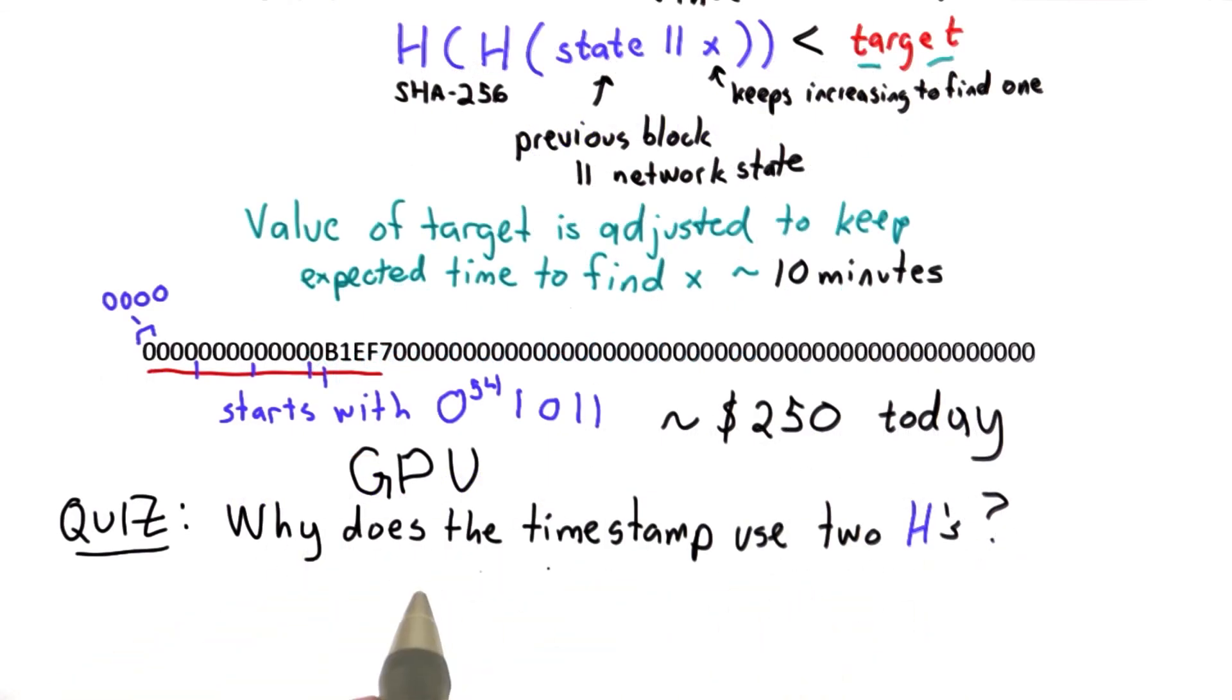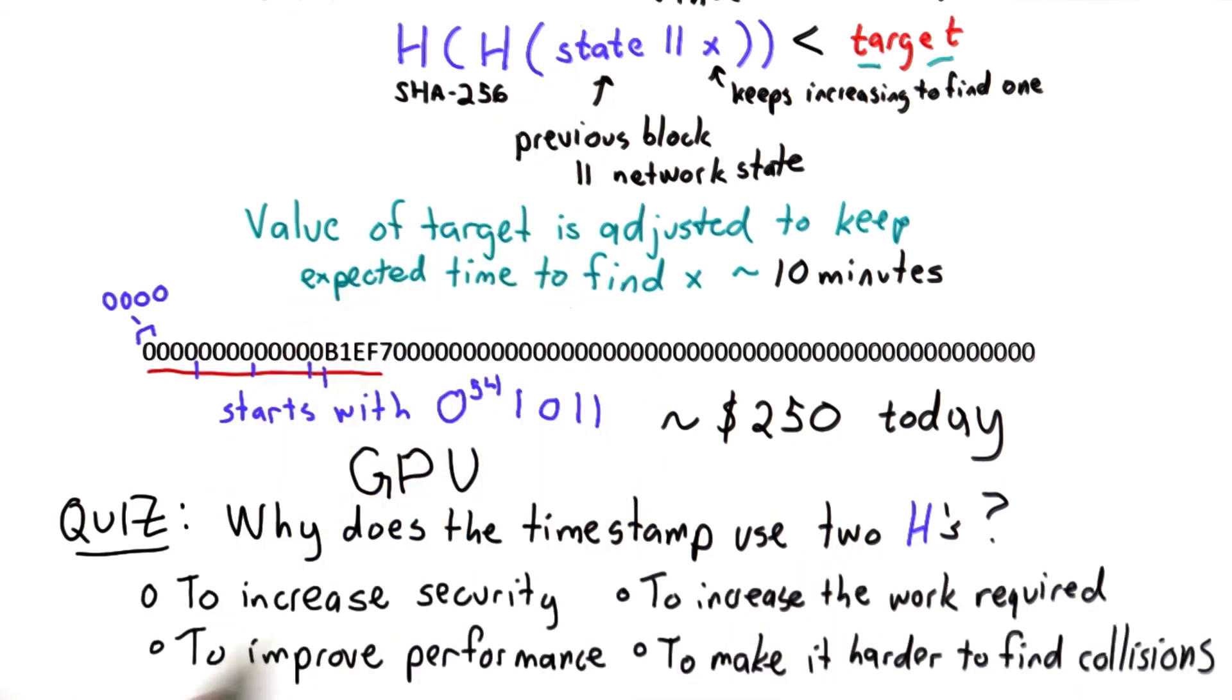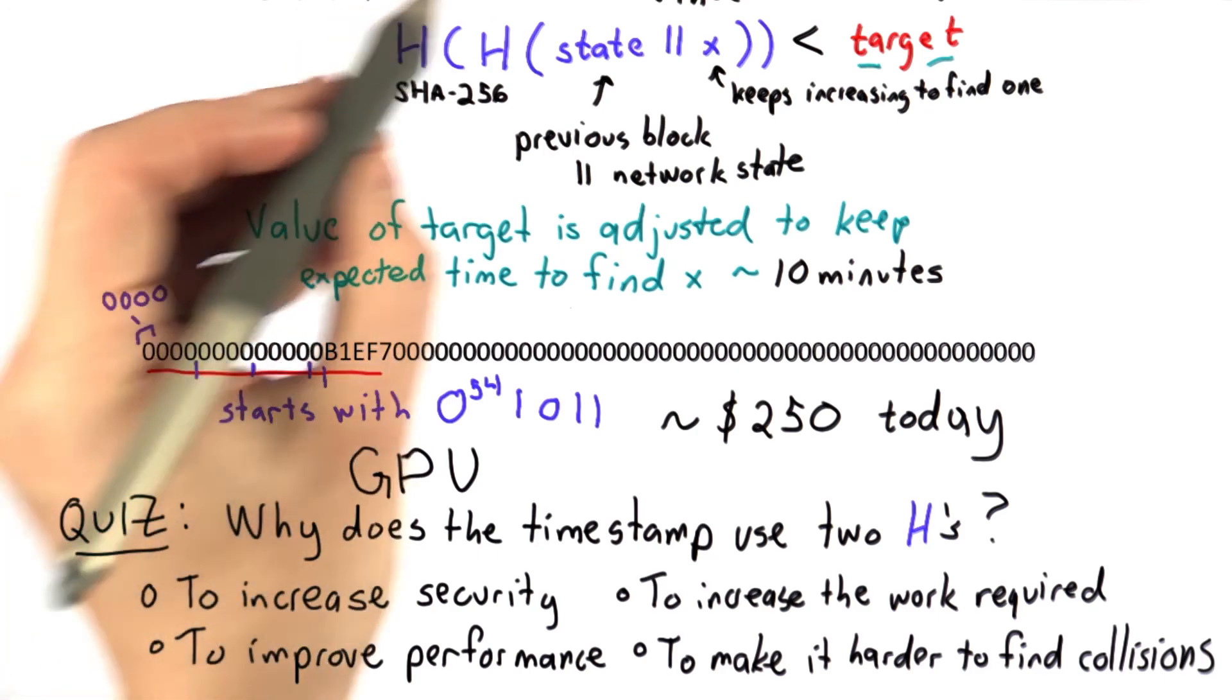So to see if this makes sense, I want to ask why the timestamp function, the one here to find the next block, uses two hashes instead of one. Here are the choices. See if you can figure out which one would make the most sense as to why there are two hash functions here.